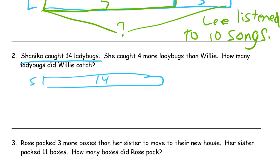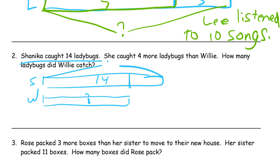She caught four more than Willie, so here's Willie. If Shanika caught more than Willie, that means Willie's tape is going to have to be shorter. We don't know how long Willie's tape is, but we do know the more. We know that if this whole thing is 14, then the more part is four — I could label it M for more. So that's this part here, and I know it's four.